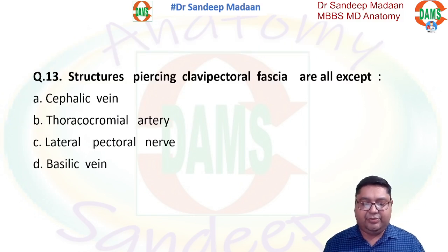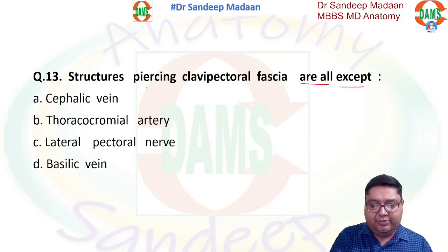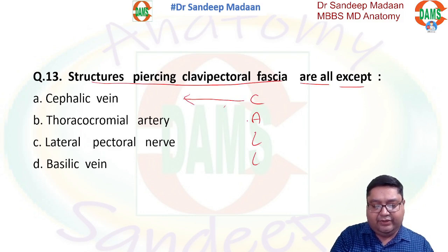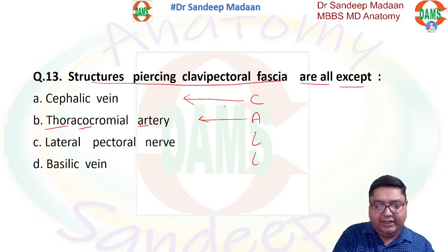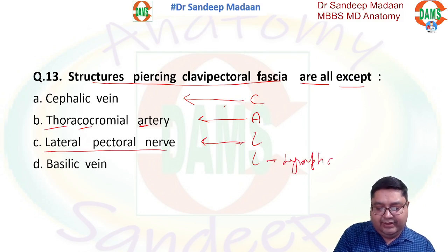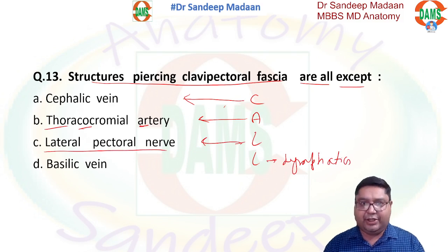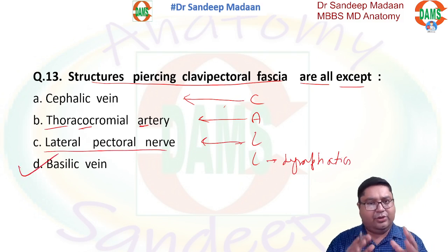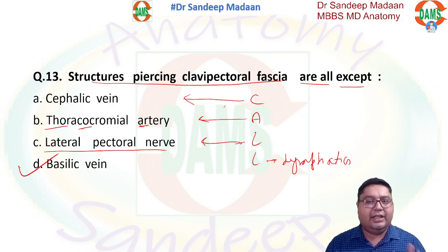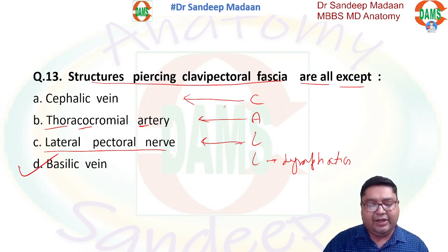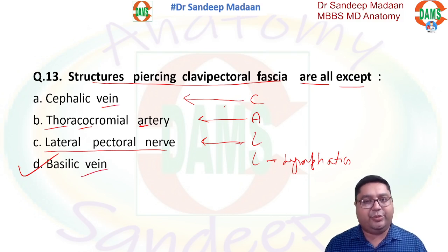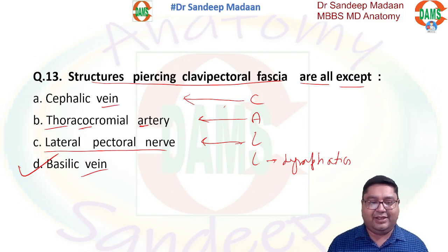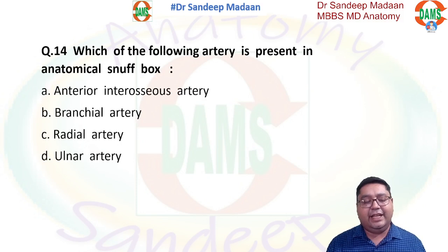Next question: structures piercing the clavipectoral fascia — all except which? Structures piercing the clavipectoral fascia can be remembered by the mnemonic CALL: C for cephalic vein, A for acromiothoracic artery, L for lateral pectoral nerve, and L for lymphatics. The basilic vein is the answer — it does not pierce the clavipectoral fascia. Also, if two options are veins in the exam, obviously one of them should be the answer since no two similar structures both pierce the clavipectoral fascia.